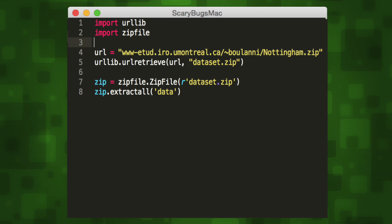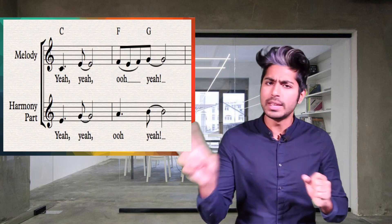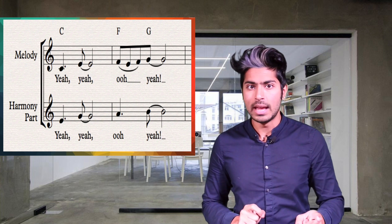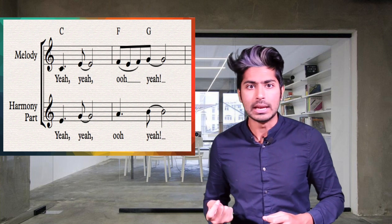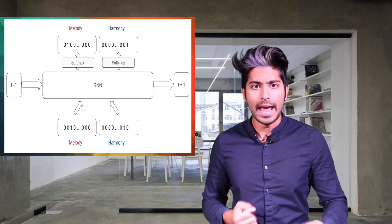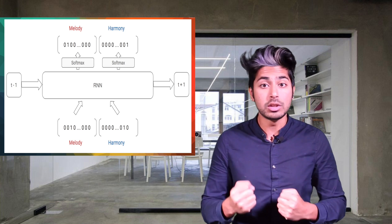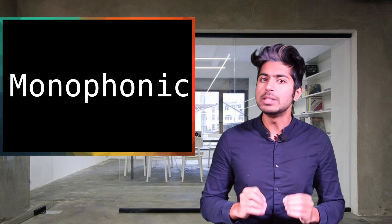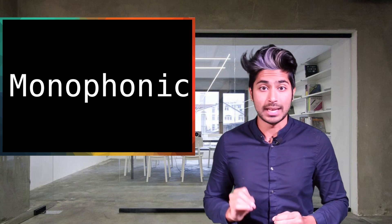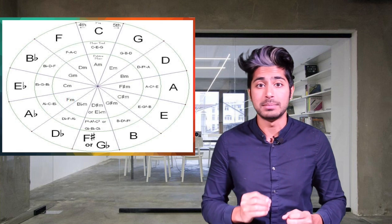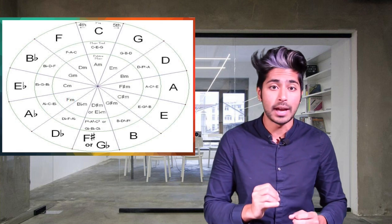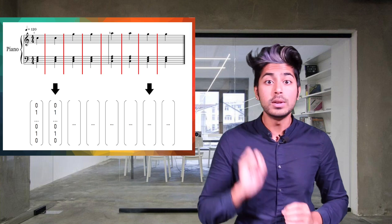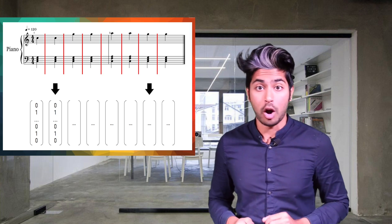Before we create the model, we need to think about how we want to represent our input data. There are two things happening: there's the main tune, or melody, and then there are the supporting notes, or harmony. Let's represent each as a vector. We'll make two assumptions: the first is that the melody is monophonic, meaning only one note is played at each time step. The second is that the harmony at each time step can be classified into a chord class. So that's two different vectors — one for melody and one for harmony.